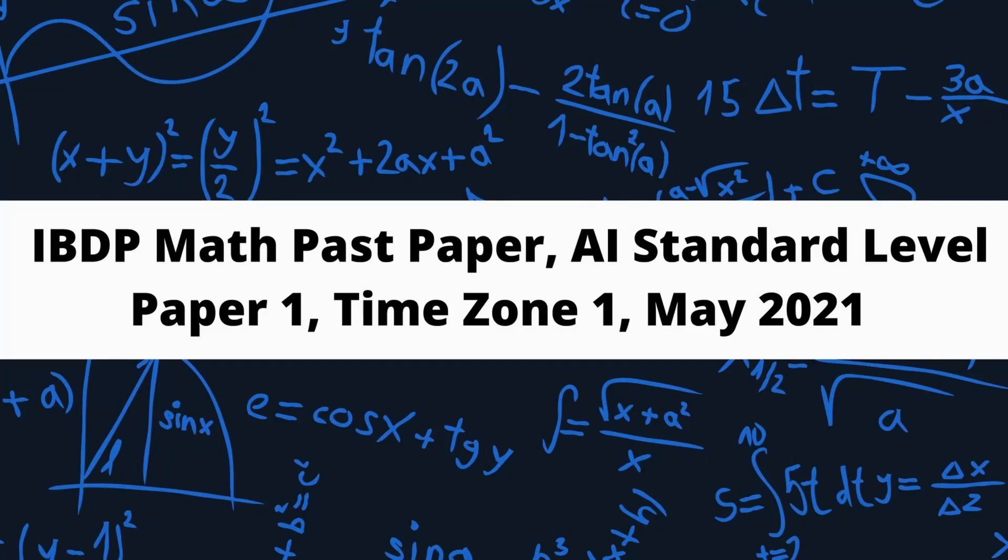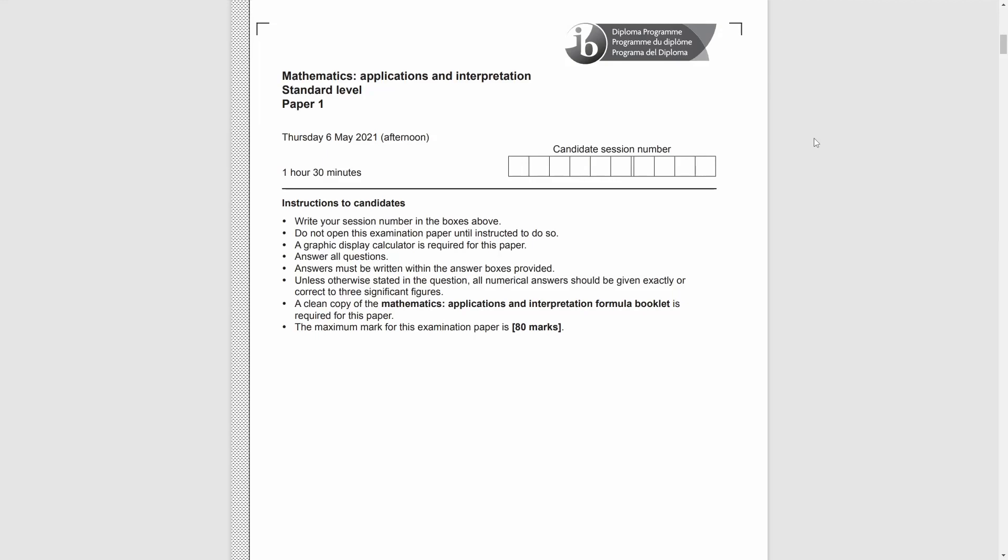In this video, we will talk about IB Math Past Paper, AI Standard Level, Paper 1, Time Zone 1, May 2021.